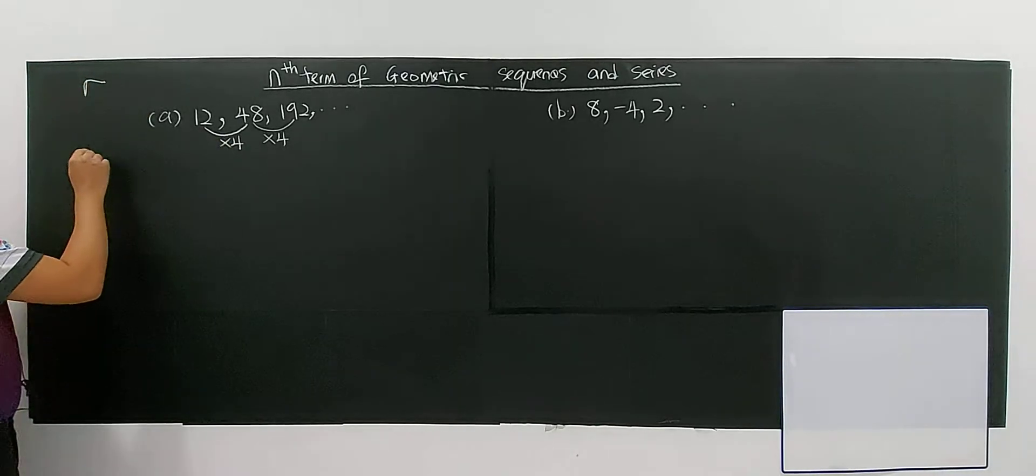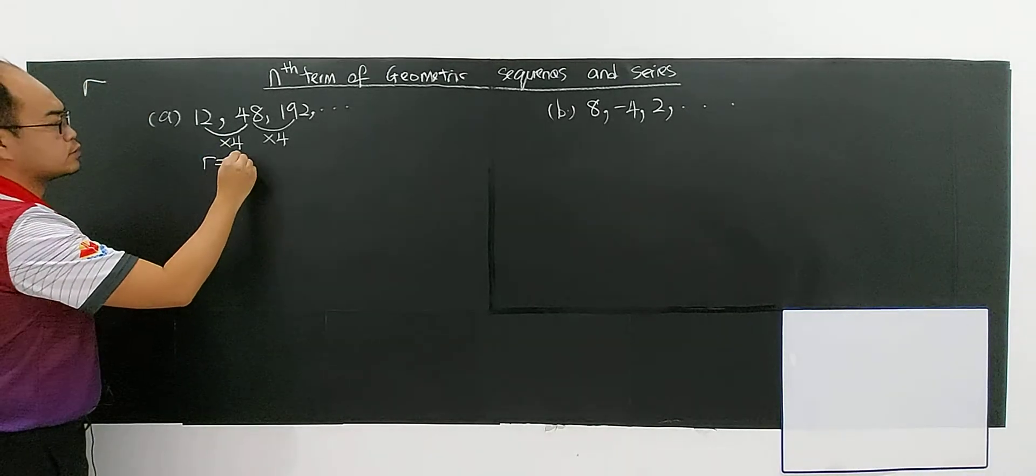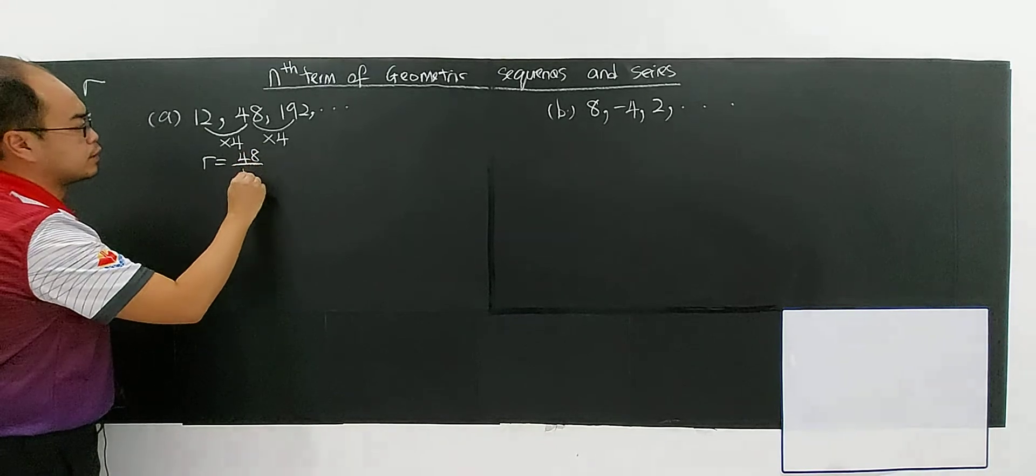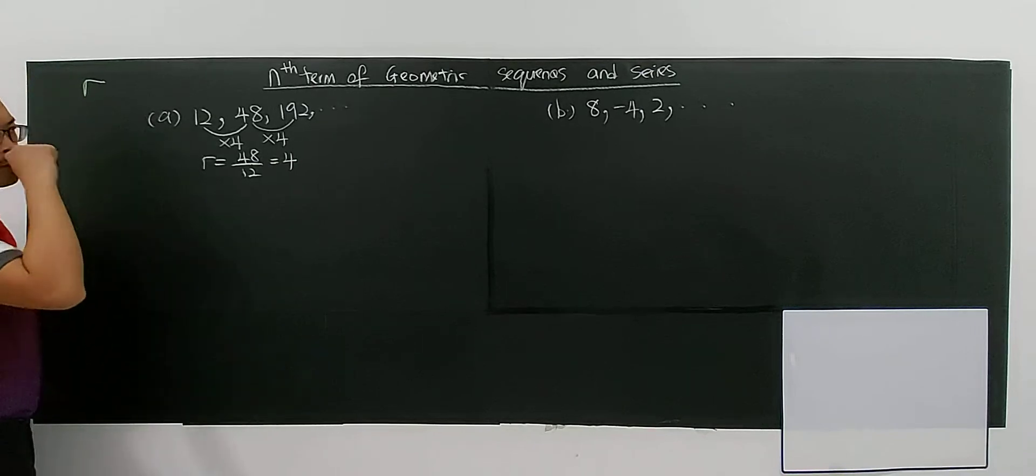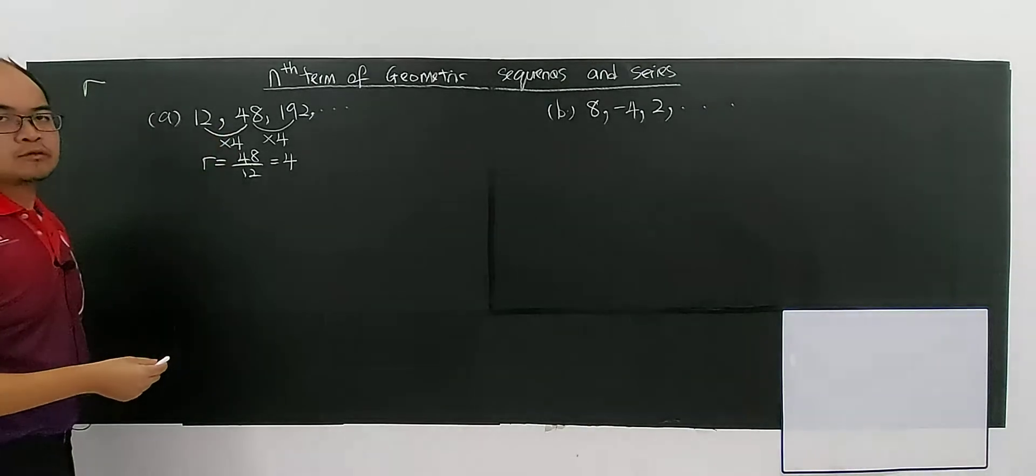So the common ratio for this case, you can just write 48 divided by 12. Or if you do 192 divided by 48, you will get 4. Or you can directly see that R is actually 4.